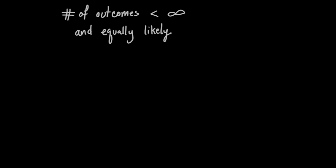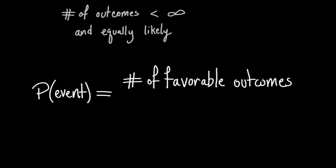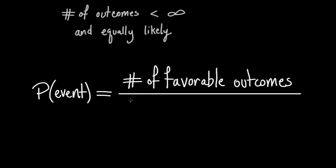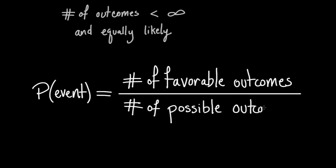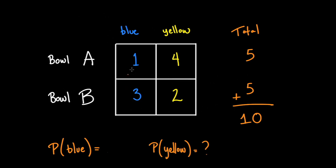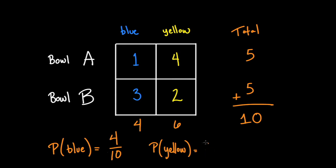When the number of possible outcomes is finite and all outcomes are equally likely, the probability of an event happening is the number of favorable outcomes divided by the total number of possible outcomes. Out of the ten marbles you could choose from, four are blue, so the probability of choosing a blue marble is four out of ten. There are six yellow marbles out of ten total, so the probability of choosing yellow is six out of ten.